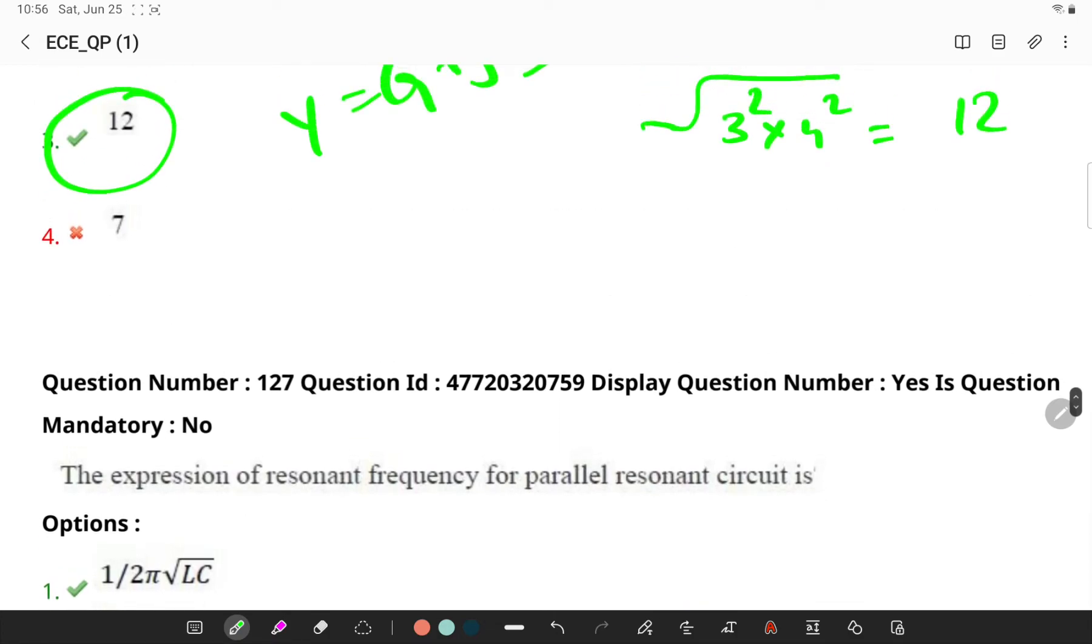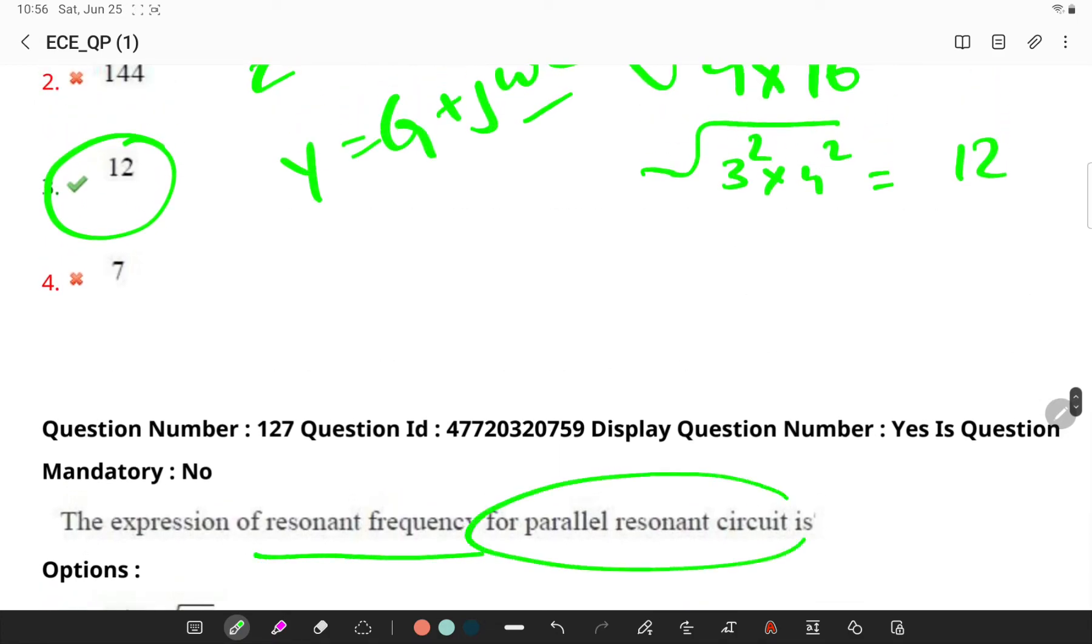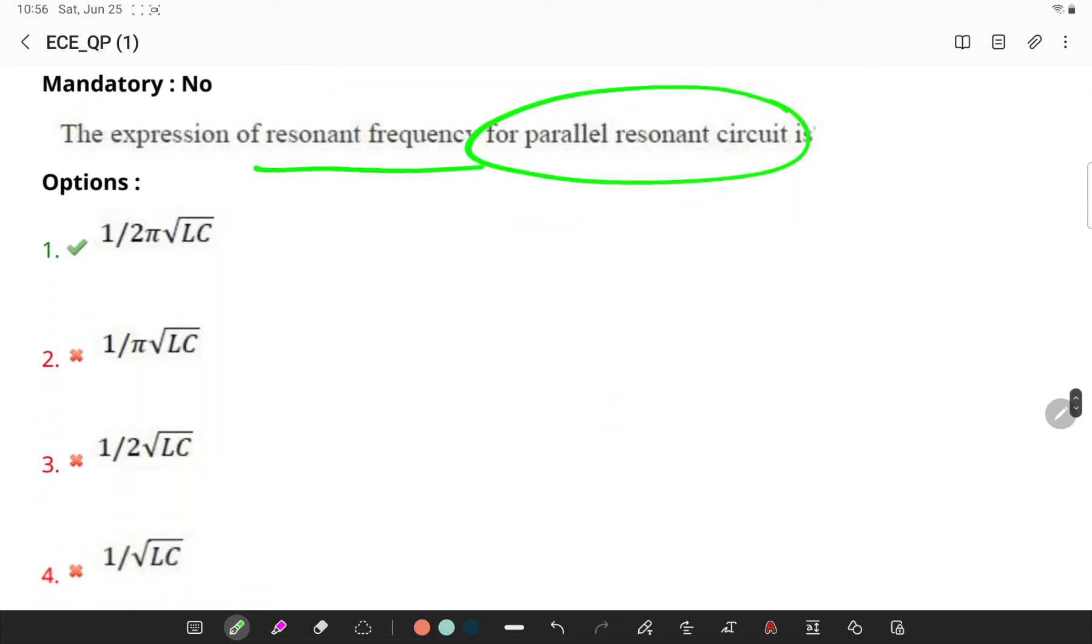Next, what is the expression for resonant frequency in a parallel resonant circuit? Remember the resonant frequency formula is given by FR is equal to 1 by 2 pi into root LC. So if you see your options, only this is matching to the particular option.